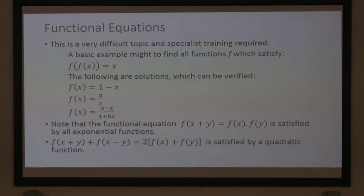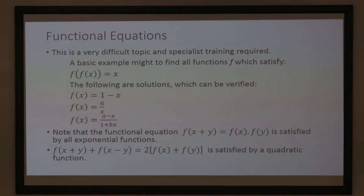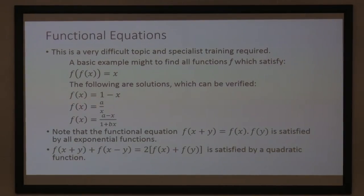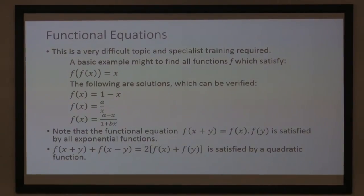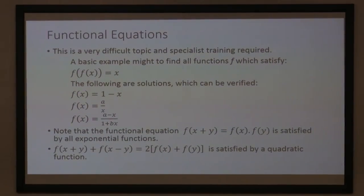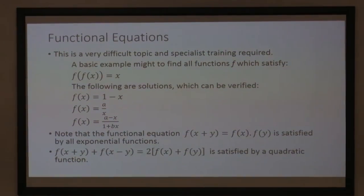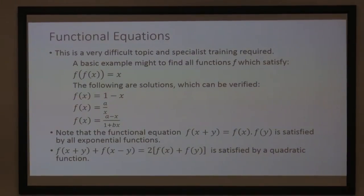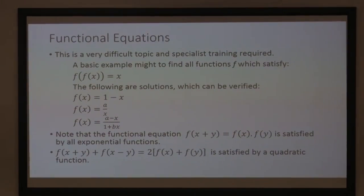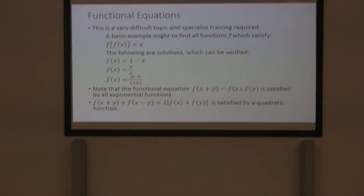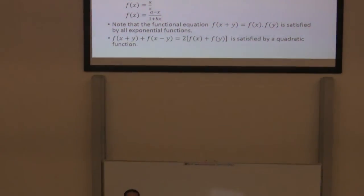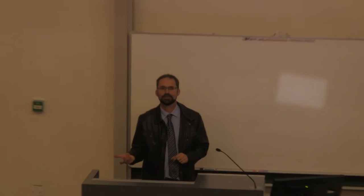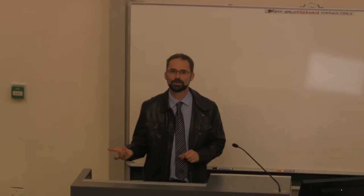Just take x squared. If f(x) = x², then f(x+y) would be (x+y)², and f(x-y) would be (x-y)². Square them out, add the two, and you'll see you get double the sum of x² plus y². So that works.